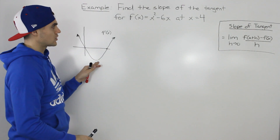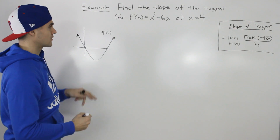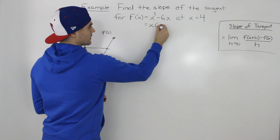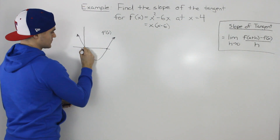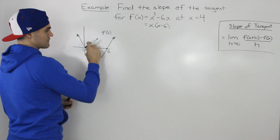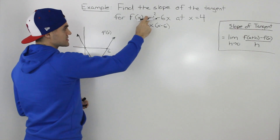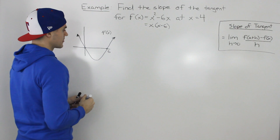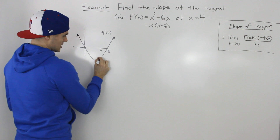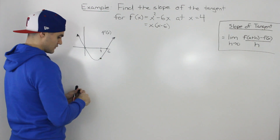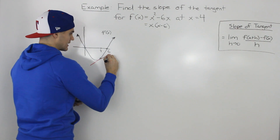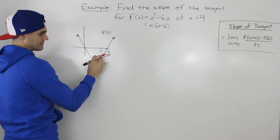To start, let's draw this function. I drew it right here — I factored out an x to get x(x - 6), so we know the intercepts happen at 0 and 6, and it's a parabola that opens up because the a value is positive. At an x value of 4, we have to find the slope of the tangent — the line that is just touching the function at that point.